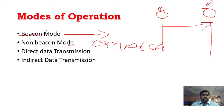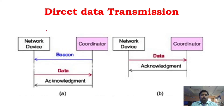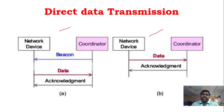There are two types of data transmission: direct data transmission and indirect data transmission, each applicable in both beacon and non-beacon modes. In direct data transmission with beacon mode, the coordinator sends the beacon signal, the device receives and synchronizes with it, then sends data directly, and the coordinator sends an acknowledgement.